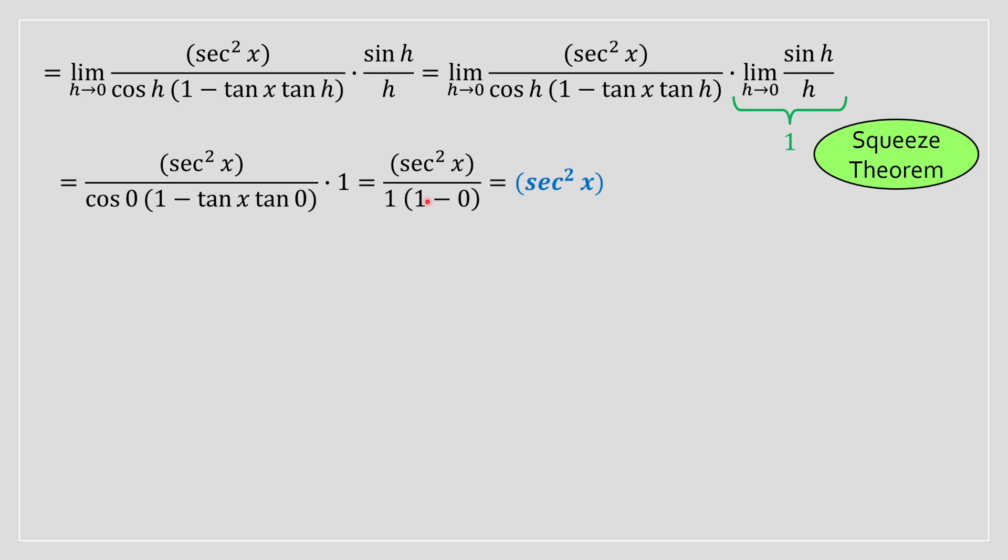So this is why, this is the reason why tan of x, the derivative of tan of x, gives you secant squared of x. If this video has helped you, please leave a like and subscribe and I'll see you later. Bye!